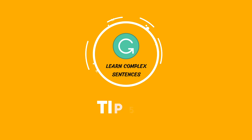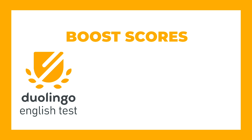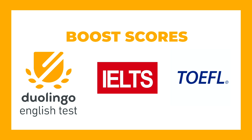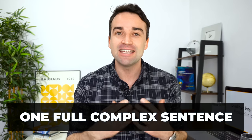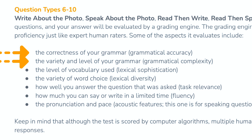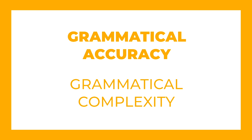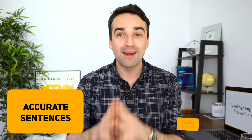Tip number five is to learn some complex sentences. Mastering complex sentences will help you boost your score on the Duolingo English test, or any other test like IELTS or TOEFL, because it shows you have a good grasp of English. Even though you don't write or speak as much on the Duolingo English test as on other exams, it's still important to include at least one full and correct complex sentence in each of your speaking and writing answers. The scoring criteria covers grammatical accuracy and grammatical complexity — Duolingo are looking for accurate sentences and complex sentences.